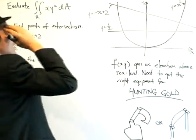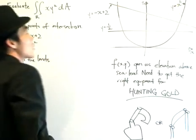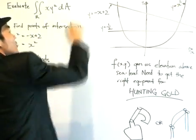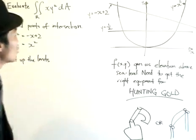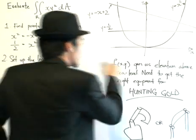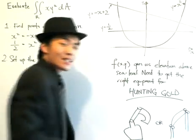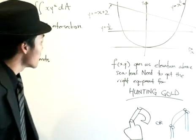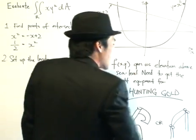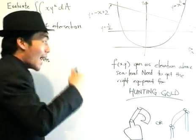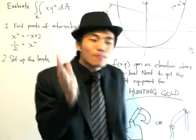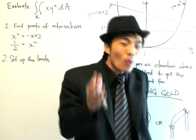Formally speaking, the region bounded between the curve y equals x squared, y equals one-half, and y equals minus x plus 2. But here's the problem. We have a certain function of x and y which gives us the elevation above sea level. And now that we're going to hunt for gold, we need to get the proper equipment.